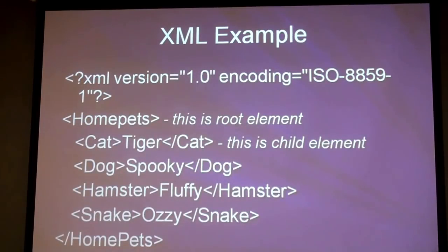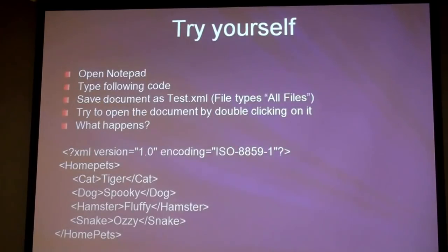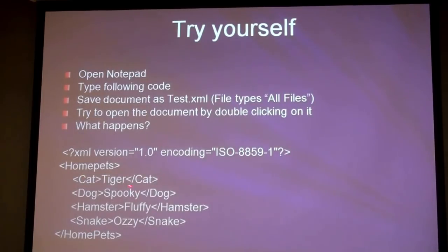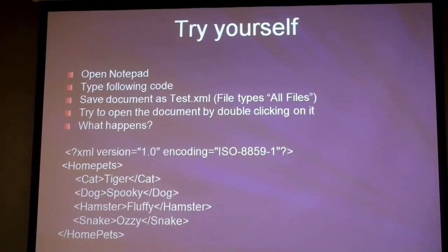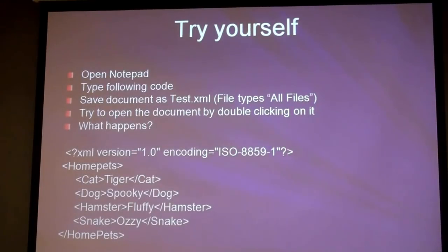The document is incorrect because XML is case sensitive. The root element is called 'HomePets' with a capital H and P — that's called camel case — but the closing element doesn't match the opening one. The browser catches that mismatch and shows an error. The error message may not always point to the exact location, but it will catch the error. Firefox shows the error with an arrow indicating where the mismatch occurred.